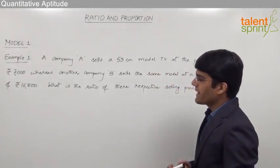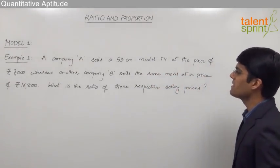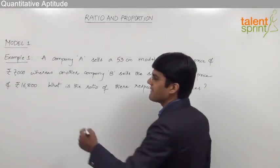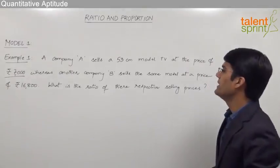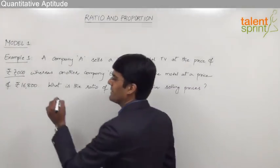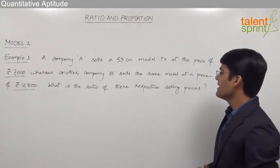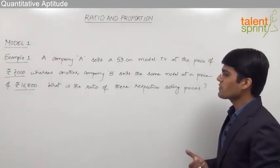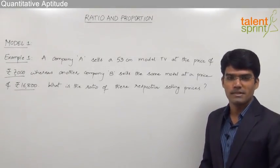The question here is: a company A sells a 53 cm model TV at the price of Rs. 7000, whereas another company B sells the same model at the price of Rs. 16800. What is the ratio of their respective selling prices? So here we are supposed to find out the ratio of the prices of the two companies.